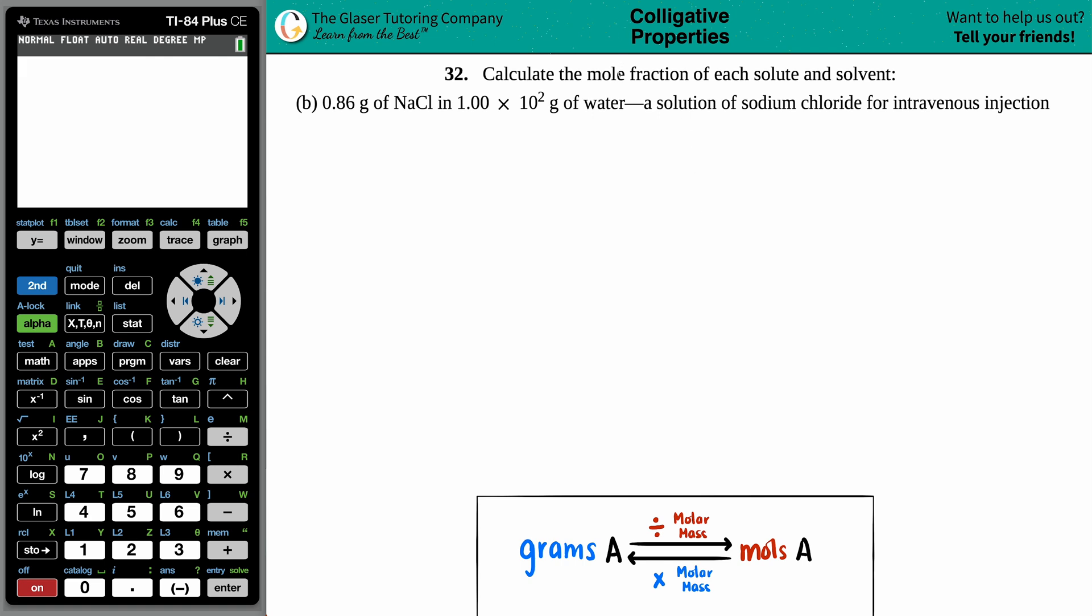Number 32. Calculate the mole fraction of each solute and solvent. Then we have letter B. So we have 0.86 grams of NaCl in 1.00 times 10 to the second grams of water, a solution of sodium chloride for intravenous injection. We have to find the mole fraction of the solute and the solvent.